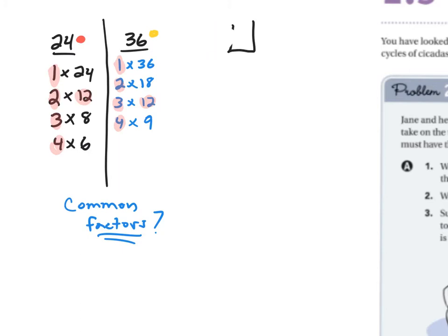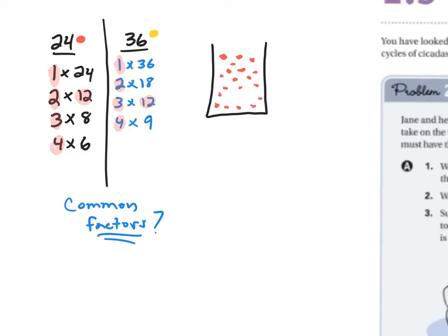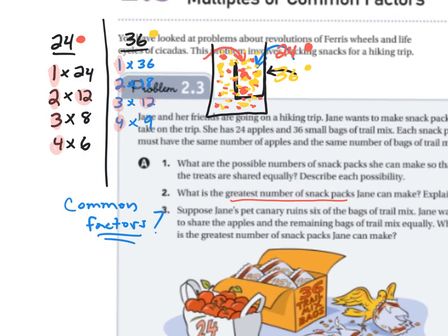Let me do one example: let's say we have one pack. If we have one snack pack, we'd need all 24 apples in that one pack, and also all 36 bags of trail mix in that one pack. That is one possible solution.